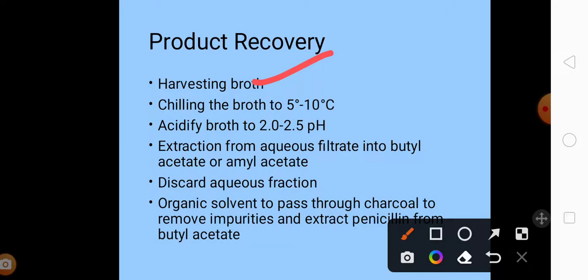Next we will acidify the broth to 2.0-2.5 pH with sulfuric acid. We will acidify the broth to convert our penicillin into its anionic form.